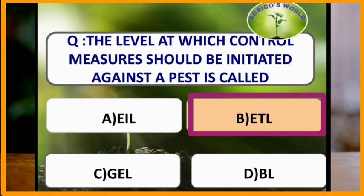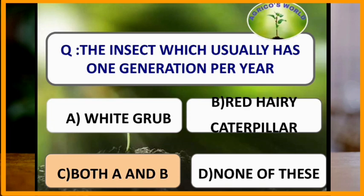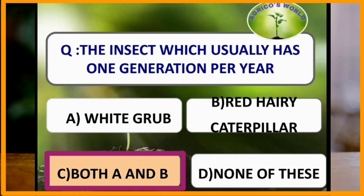The insects which usually have one generation per year are white grub and red hairy caterpillar — both pests complete their generation in one year.